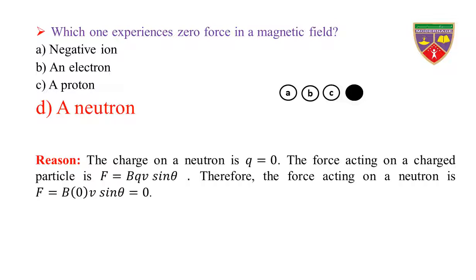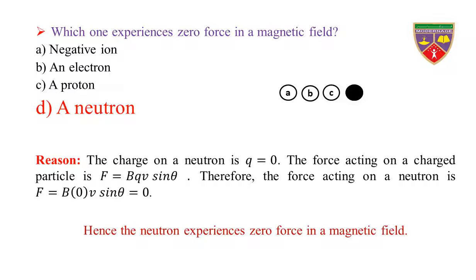Reason: The charge on a neutron is Q = 0. The force acting on a charged particle is F = BQV sinθ. Therefore, the force acting on a neutron is F = B × 0 × V sinθ = 0. Hence, the neutron experiences zero force in a magnetic field.